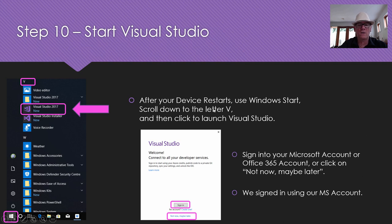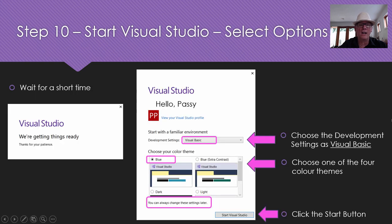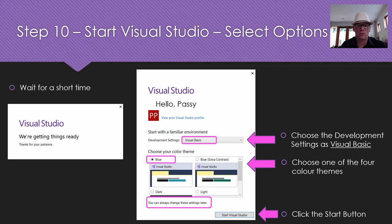Now it'll ask you to sign into your Microsoft account or Office 365. We just clicked sign in and were able to sign in to our account and set the development settings to do most of our programs in Visual Basic — so that when it starts up, it'll be Visual Basic ready. It's not going to stop you from doing other programs; you can pick new projects in different languages, but this just defaults your start position when you start up Visual Studio.